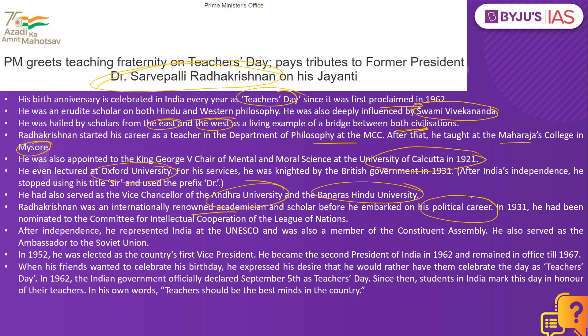After independence, he represented India at UNESCO and was also a member of the Constituent Assembly. He also served as an ambassador to the Soviet Union. In 1952, he was elected as the country's first Vice President. He became the second President of India in 1962 and remained in office till 1967. These are some important factual data to remember with respect to Sarvepalli Radhakrishnan.